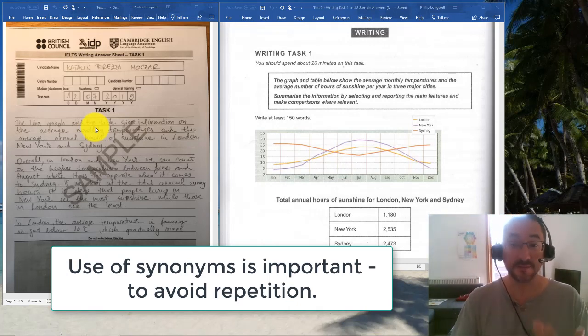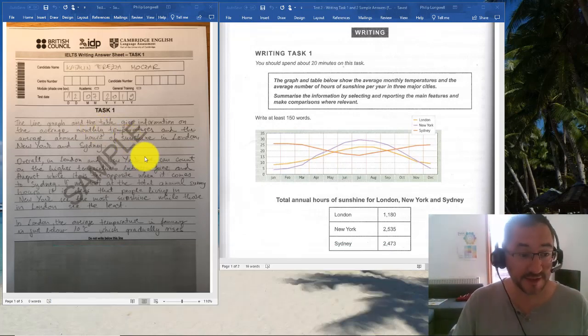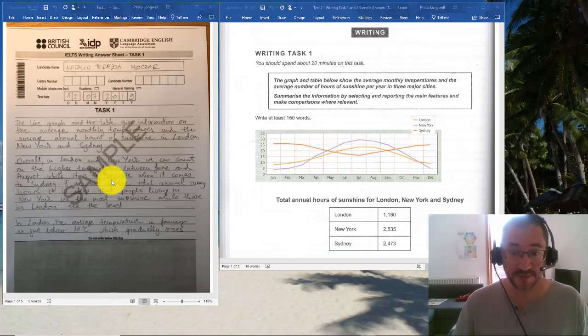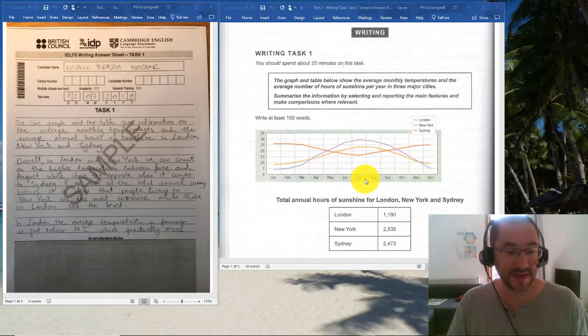The second paragraph should always look at the overall picture. In this case we're looking at the overall features: what are the main features, what's obvious, what's clear, what are the main differences about these three cities?